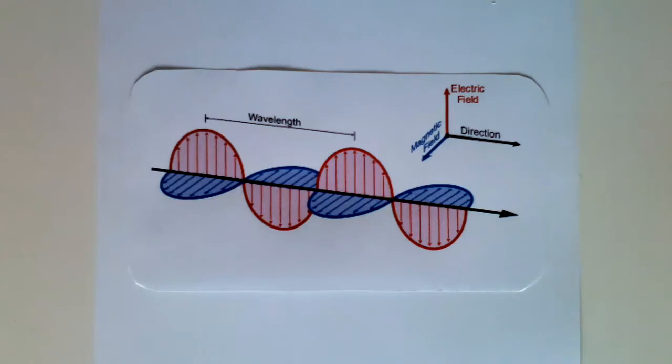Electromagnetic waves, or radiation, is a form of energy that can travel through empty space and includes visible light. It also includes gamma rays, which can cause radiation sickness by damaging cells, and radio waves, which are vital for wireless communication technologies.